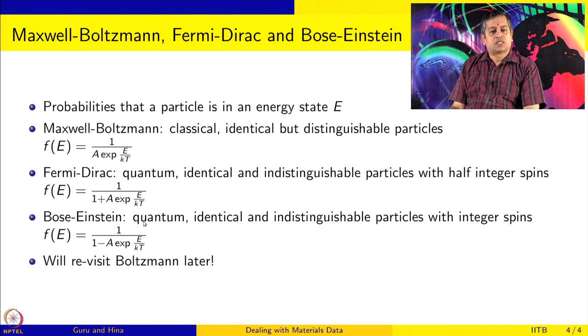Bose-Einstein is also a quantum distribution and it looks at identical and indistinguishable particles, but the spins are integer spins. Things like radiation have to be described using this distribution, and the probability distribution function is 1 by 1 minus A exponential E by kT. So it is 1 plus and 1 minus, and here there is no 1. That is the difference.